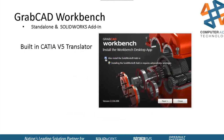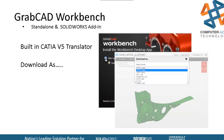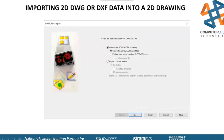I wanted to mention GrabCAD Workbench. They have a built-in CATIA V5 translator. I stumbled upon this when a customer couldn't pull CATIA V5 parts into SolidWorks. We went into Workbench — it's a free sign-in — pulled in the part, it converted it for us, and I downloaded it back as a STEP file. It worked out really well, because if you only need to convert a CATIA V5 file once or twice a year, you don't want to buy a very expensive translator just for that.